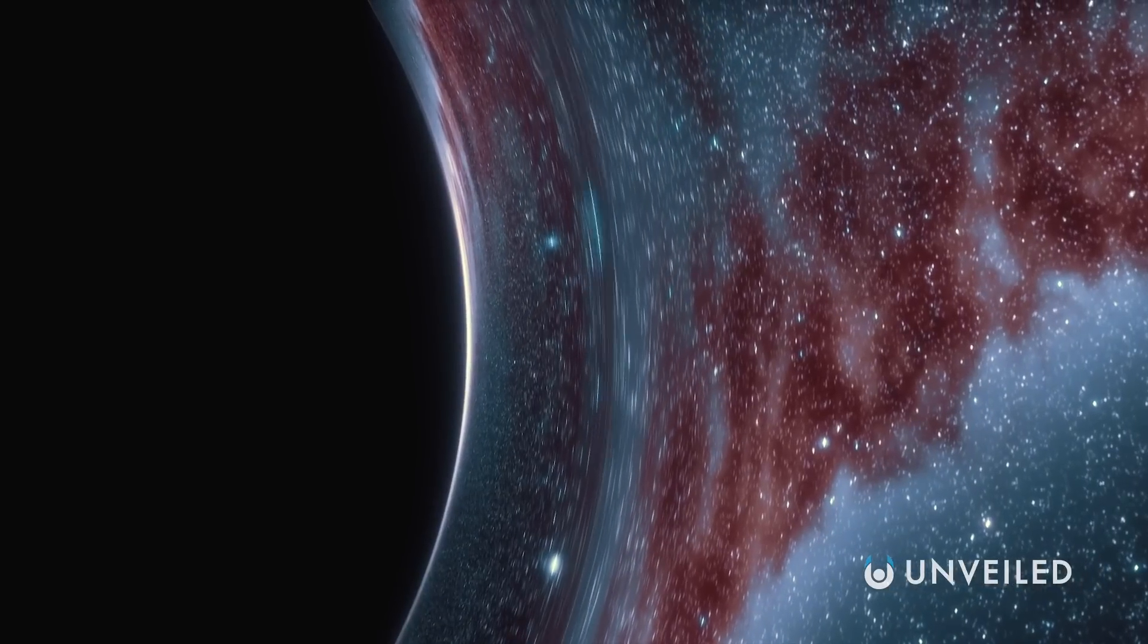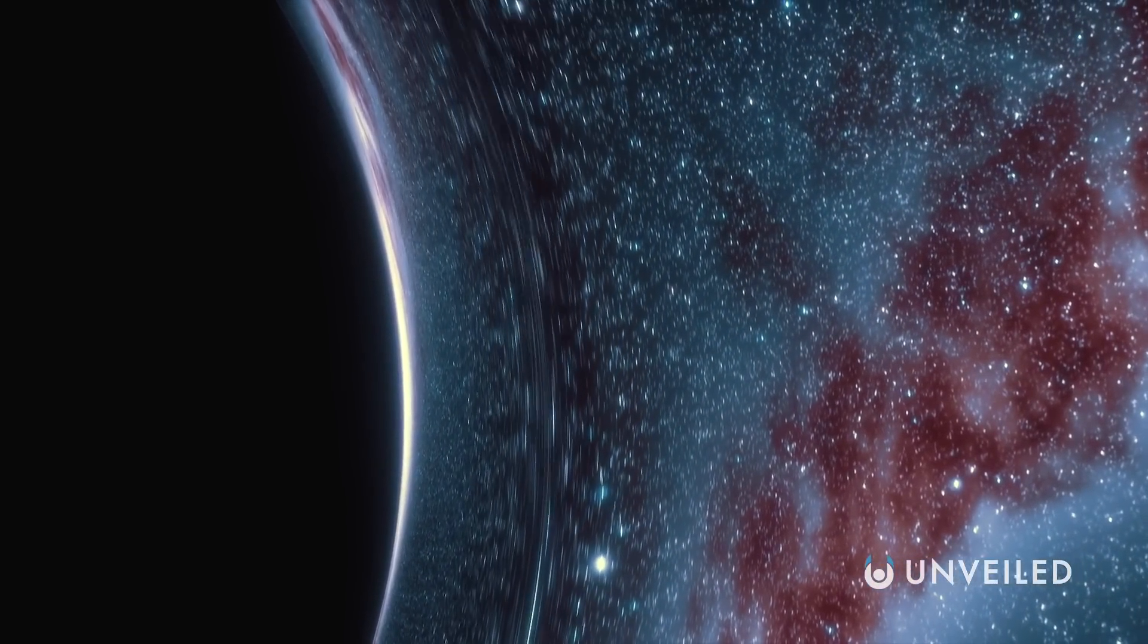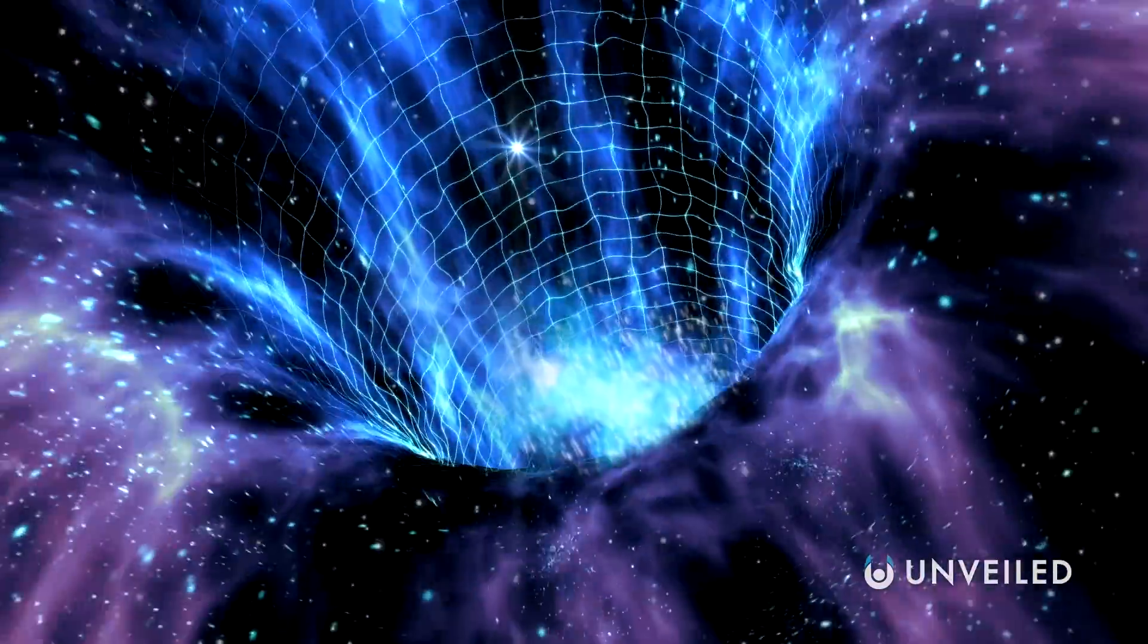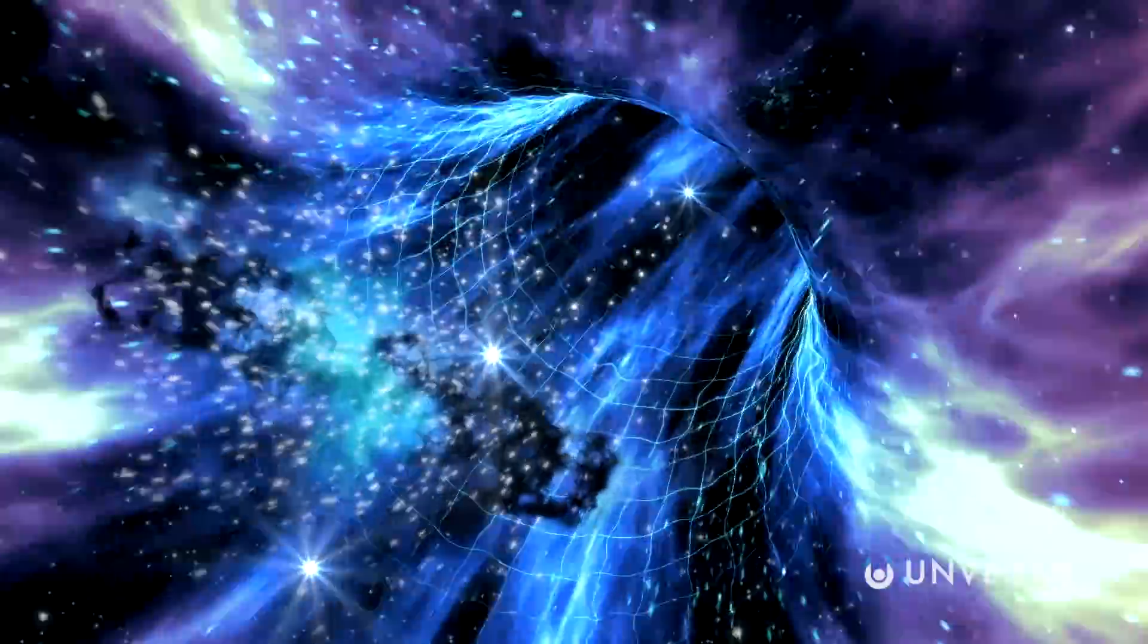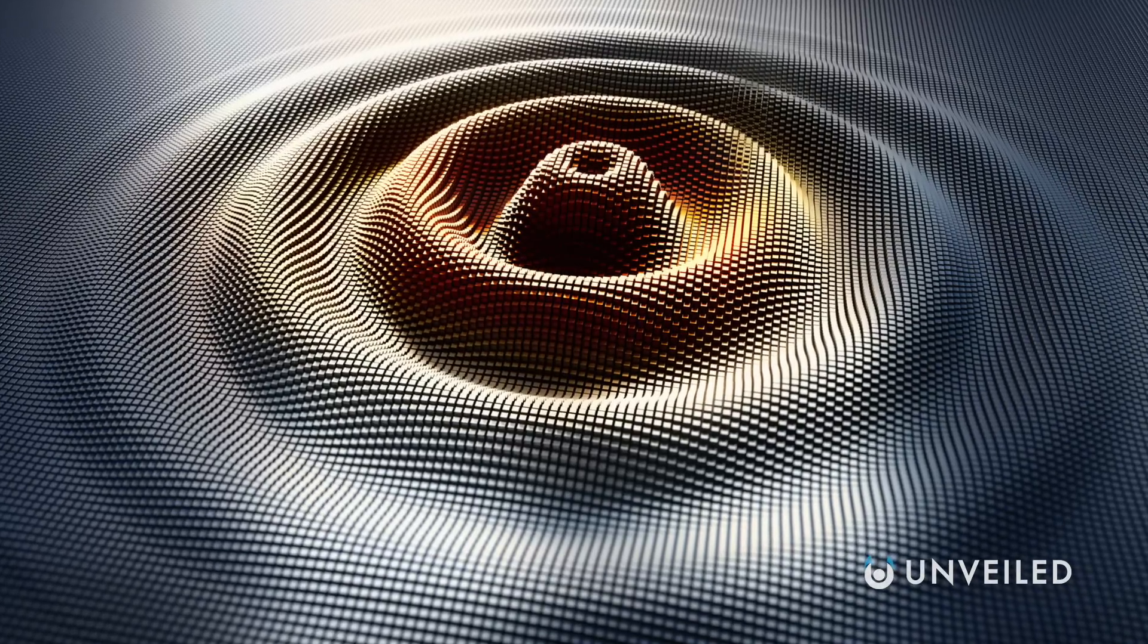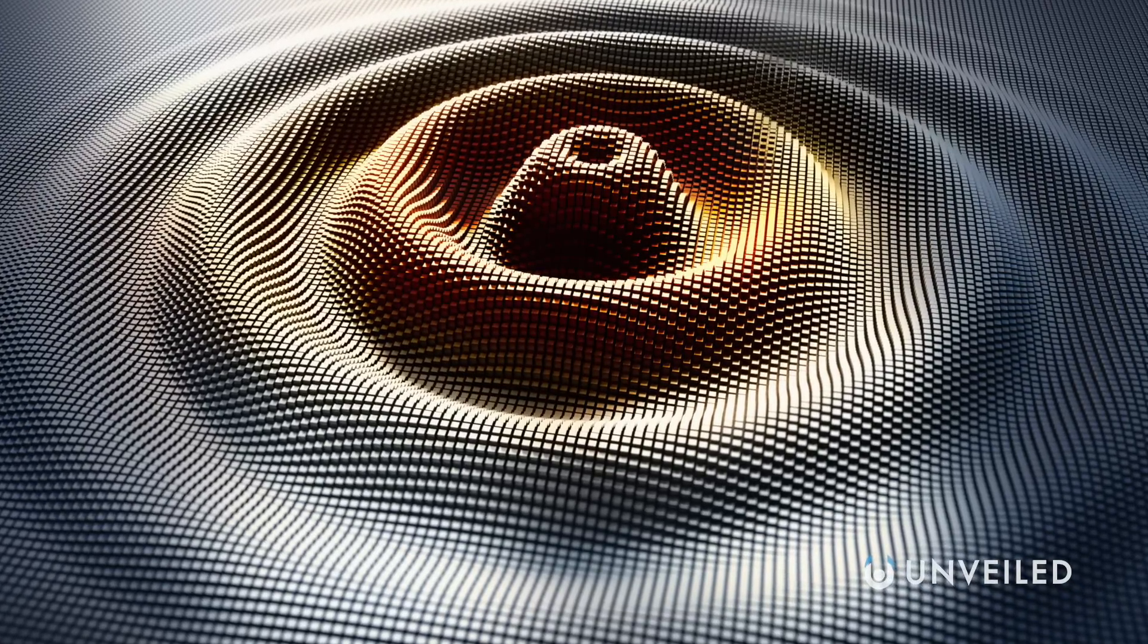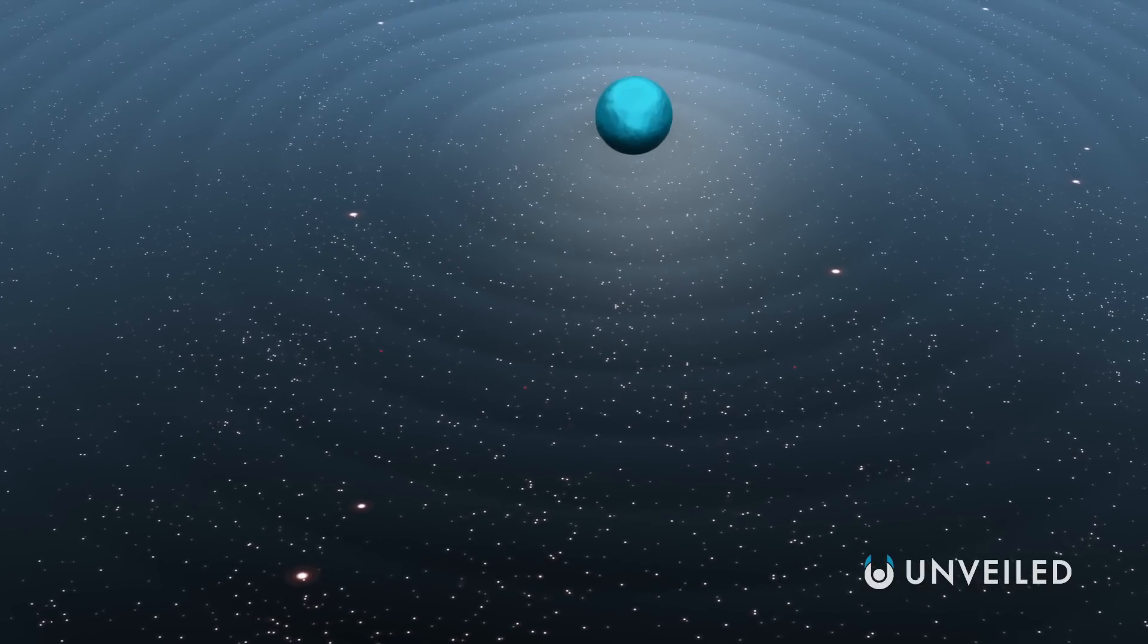Black holes, for example, are traditionally only noticeable by the effects they have on objects around them. But now, they can be detected via gravitational waves too, by tracing the waves back to their source. This is extremely intricate science, however, which is why it's good news that a new way has recently been developed to measure gravitational waves with greater accuracy. And it's a method that makes use of our very own moon.